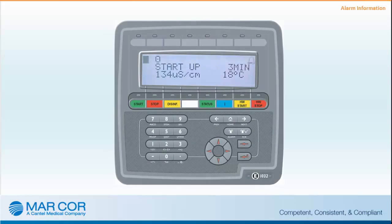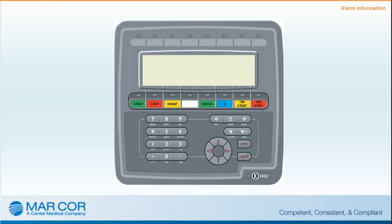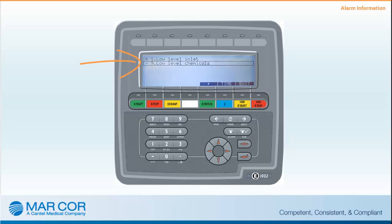When an alarm occurs, an alarm bell symbol will be displayed in the upper right corner of the display screen. To determine the cause of the alarm, press the Alarm button. The alarm list will display the last 32 alarms that have occurred, with the most recent alarm at the top. Four attempts are automatically made to self-clear alarms by the CWP prior to alerting the operator. The current alarm will have an asterisk symbol in front of it. If the cause of the alarm has been corrected before acknowledgement, the asterisk symbol will change to a minus symbol.